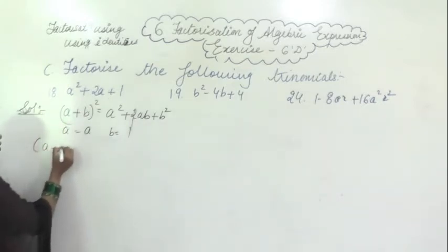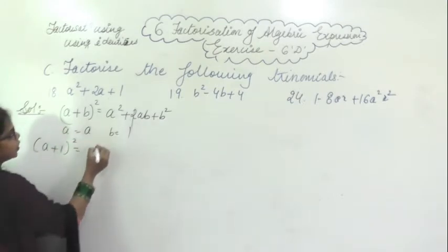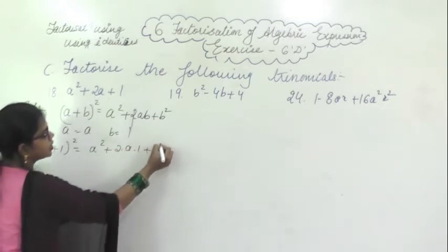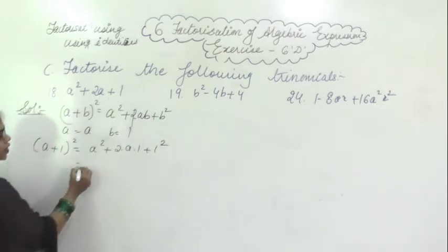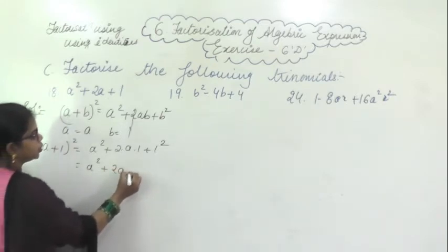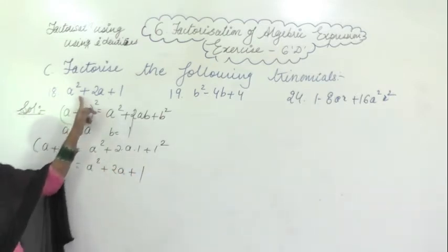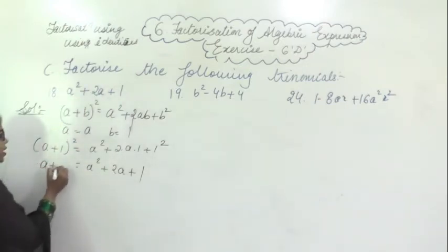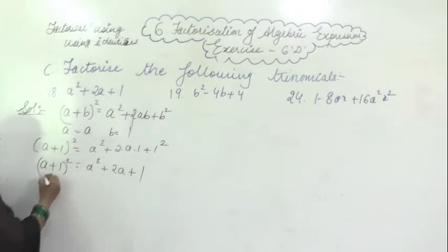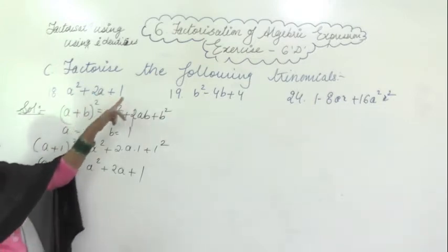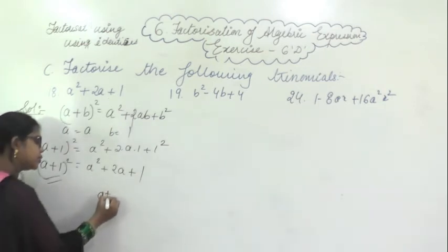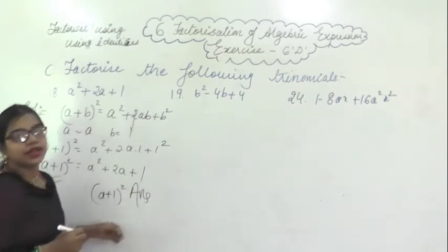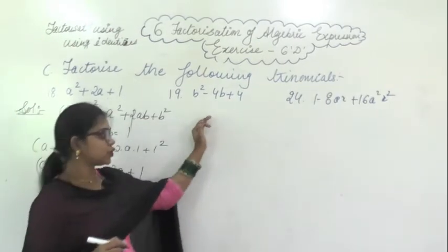Substituting, you will get (a+1)² = a² + 2×a×1 + 1² = a² + 2a + 1. So what is the factor? Instead of this, I can write the answer as (a+1)². So the factorization of a² + 2a + 1 is (a+1)².